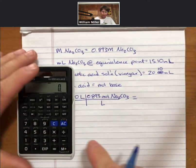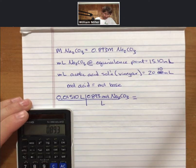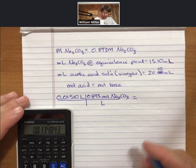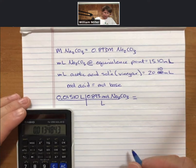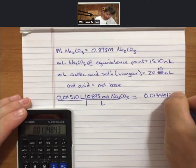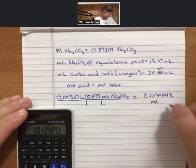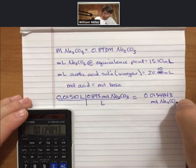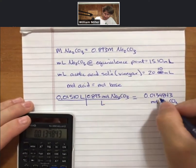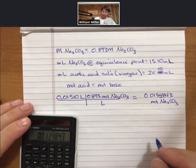When I do that, I get 0.0134843 moles sodium carbonate. And I only have 3 sig figs because I'm limited by my molarity.